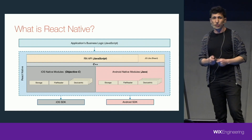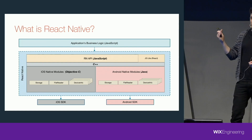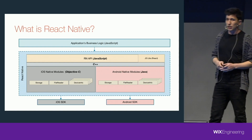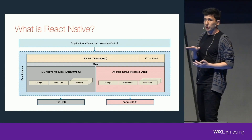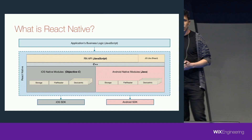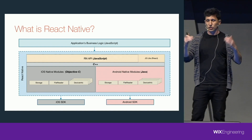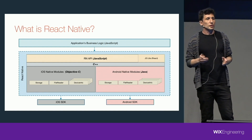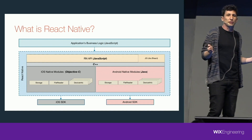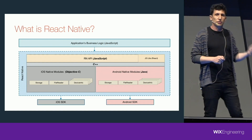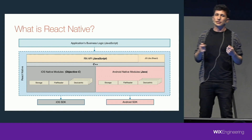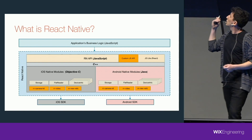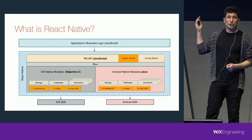Our business logic of the React Native code is above this API. And there is a thin C++ layer connecting between these two runtime environments — the native Java and Objective-C, and the JavaScript. React Native, out of the box, does not cover all the native capabilities, not all the native SDK. But React Native is an extendable framework — we can add our own native modules and expose a JavaScript API.